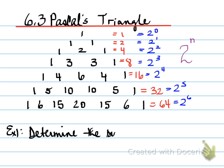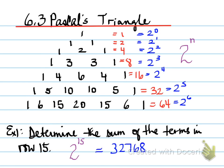So example 1, you're asked to determine the sum of the terms in row 15. The sum of the terms in row 15 means I want 2 to the power of 15. That will give us the sum of that entire row. The sum of 2 to the power of 15 is 32,768.